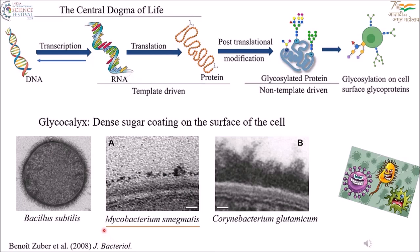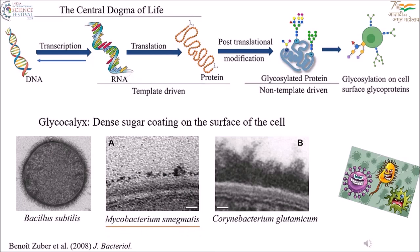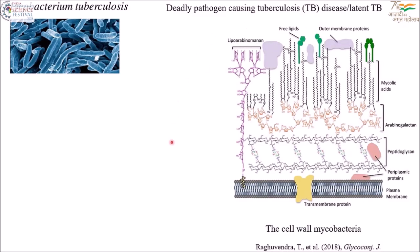I will be talking about this particular species of bacteria, which is Mycobacterium. This bacteria, named by the disease it causes — tuberculosis — the cell wall of this bacteria, or the glycocalyx of this bacteria, is shown here, which has a lot of sugar moieties.